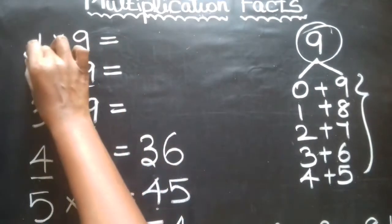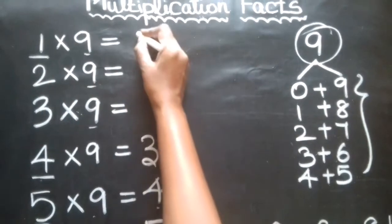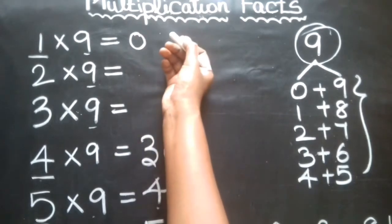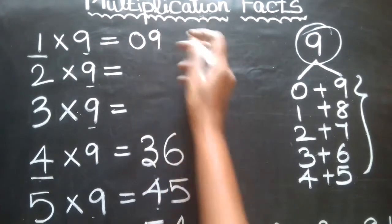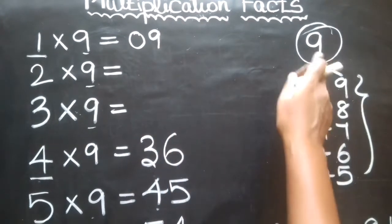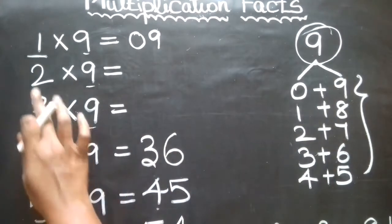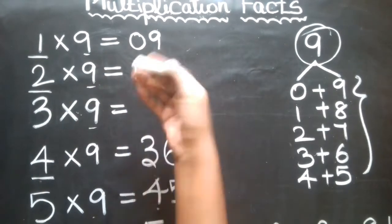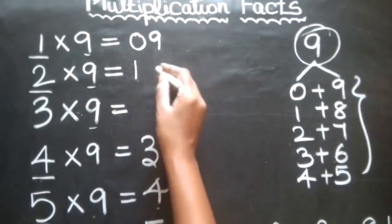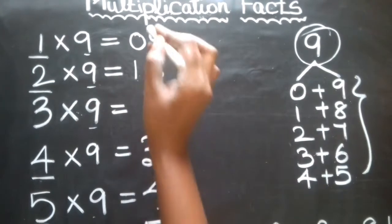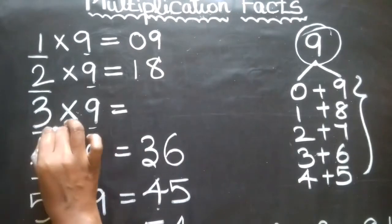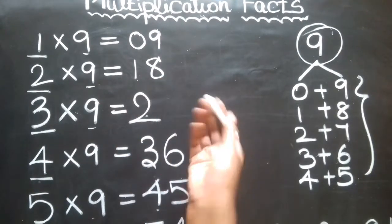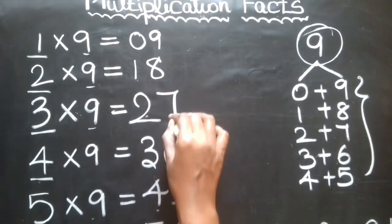For 1 times 9: the before number is 0 — add 9 to 9, so 0 plus 9 is 9, meaning 1 times 9 is 9. For 2 times 9: the before number is 1 — add 9 to 8, so 2 times 9 is 18. For 3 times 9: the before number is 2 — add 9 to 7, so 3 times 9 is 27.